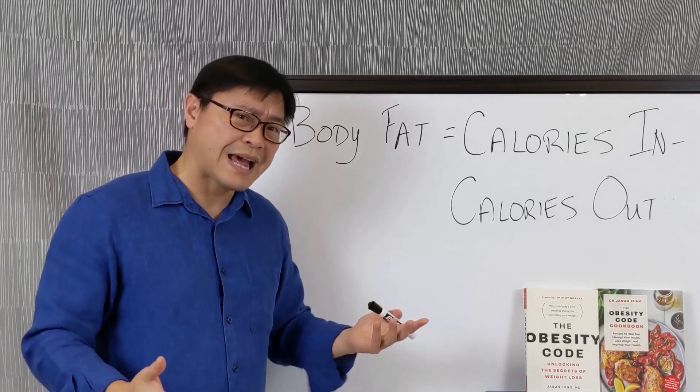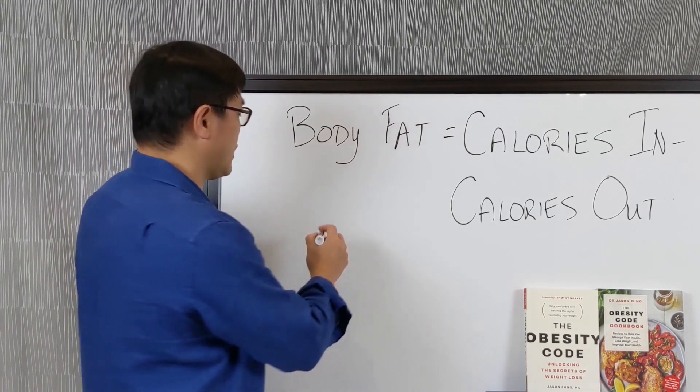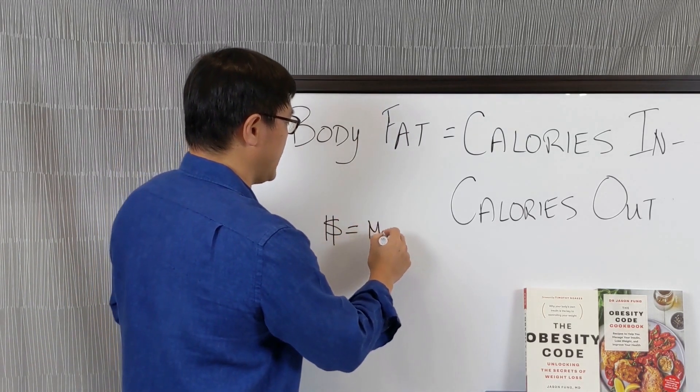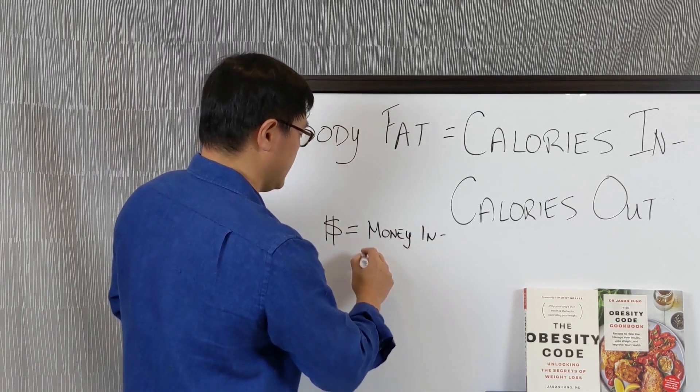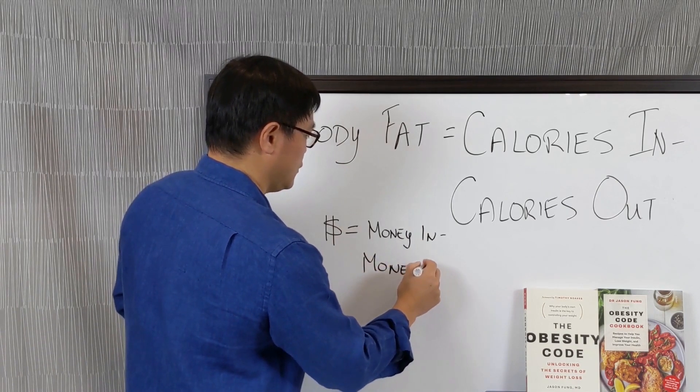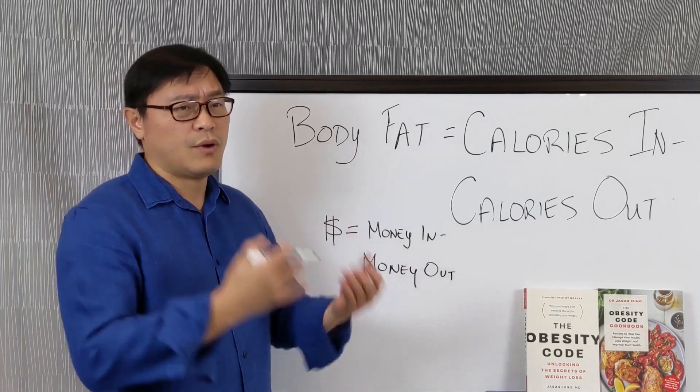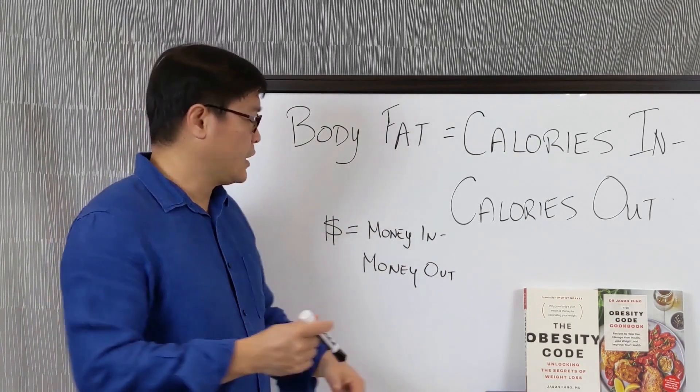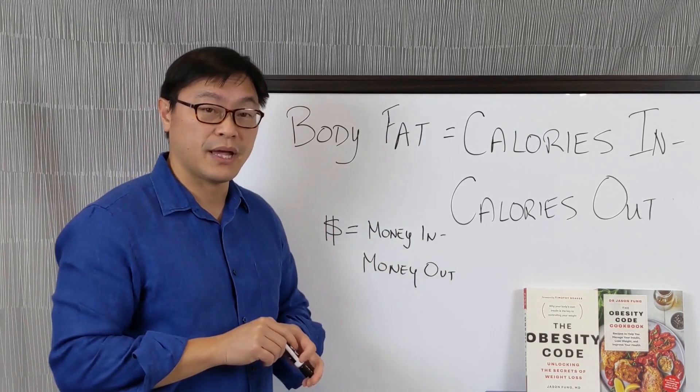We can make an analogy. For example, instead of body fat, we could say, the number of dollars in your bank account equals the money that you put in minus the money you take out. So it's really the same thing. However, if you make $100,000 a year, and you spend $100,000 a year, you don't have any money in the bank.